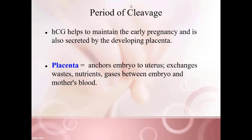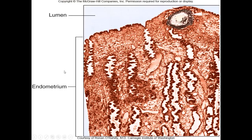HCG also helps with the developing placenta — the structure that anchors the embryo to the uterus and is the site where gases, waste, and nutrients are exchanged between the embryo and the mother's blood. If HCG is not present at appropriate levels, the pregnancy will be lost. Here you have the endometrium with the blastocyst fully implanted within it, and you can see the inner cell mass right there.